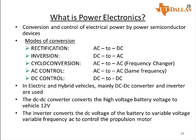In electric and hybrid vehicles, the DC-DC converter and inverter are mainly used. In most vehicles the DC-DC converter converts the high voltage battery to the vehicle voltage required — in this case mostly 12 volts. So if you have a 300 volt battery it must be converted to 12 volts, which is used for all the accessory loads. The inverter converts the DC voltage of the battery to variable voltage and variable frequency AC to control the propulsion motor.